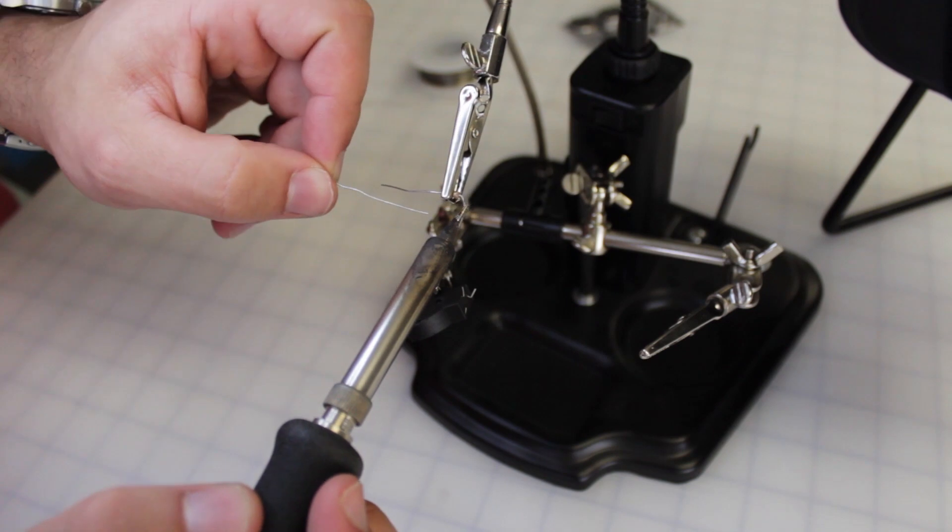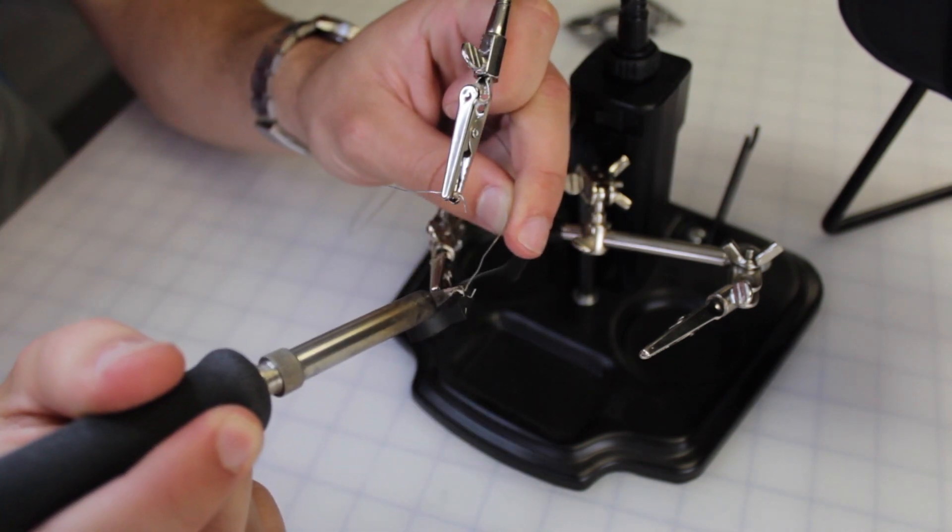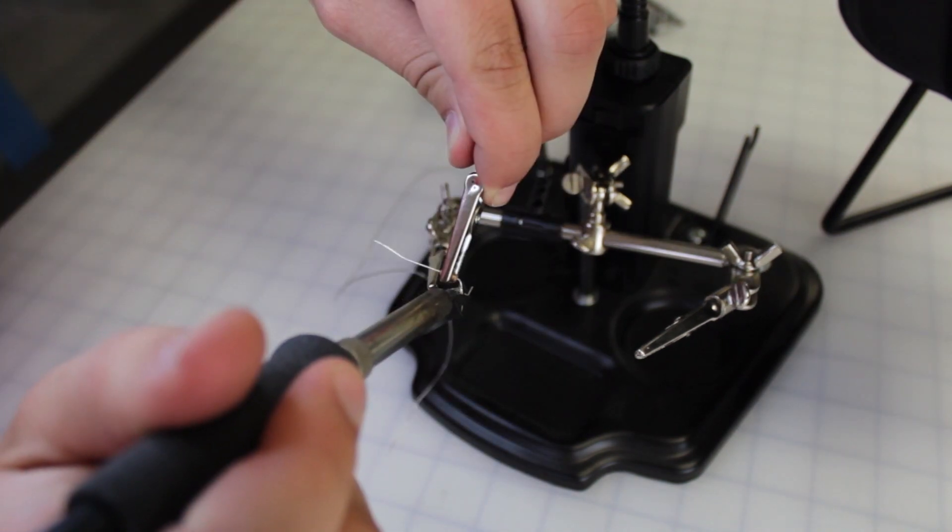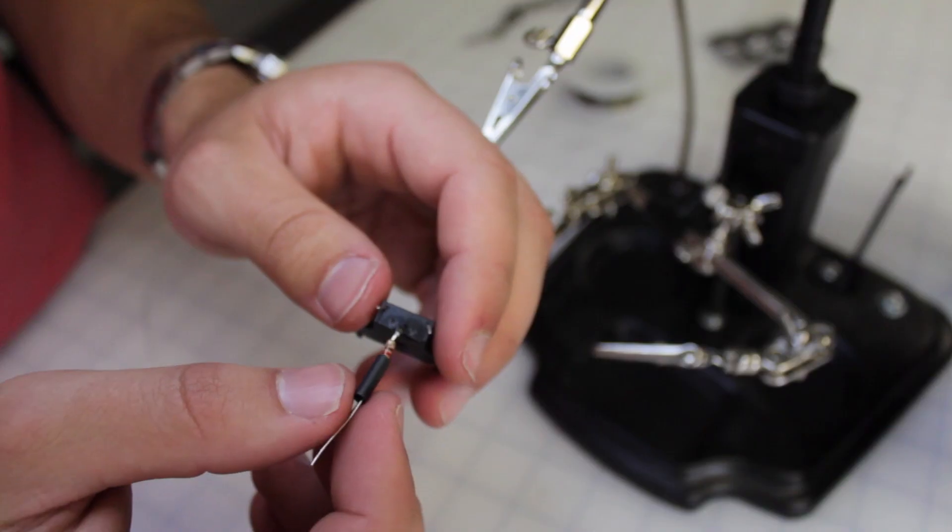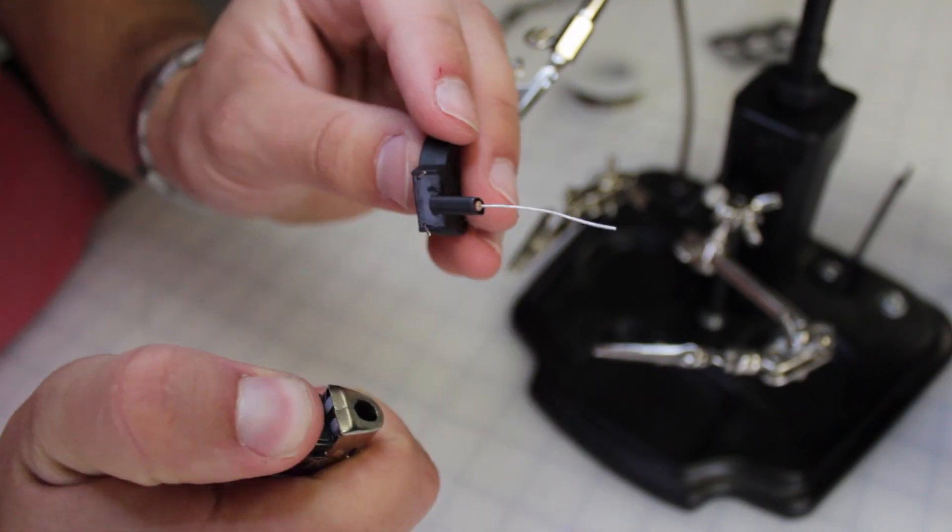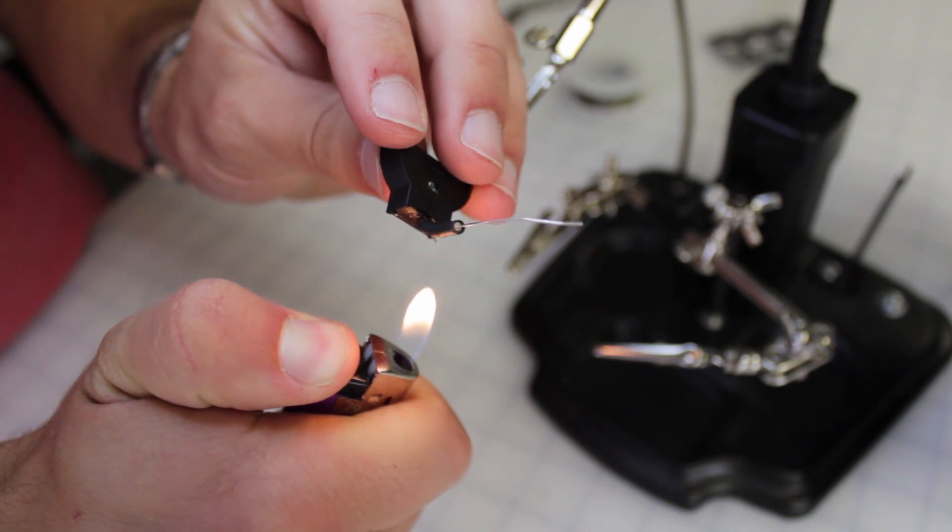Tin the short lead on the resistor and the middle lead on the battery holder. Once that's finished, solder the two together. Place a piece of heat shrink tubing over the resistor and the joint and then use the lighter to shrink it down.